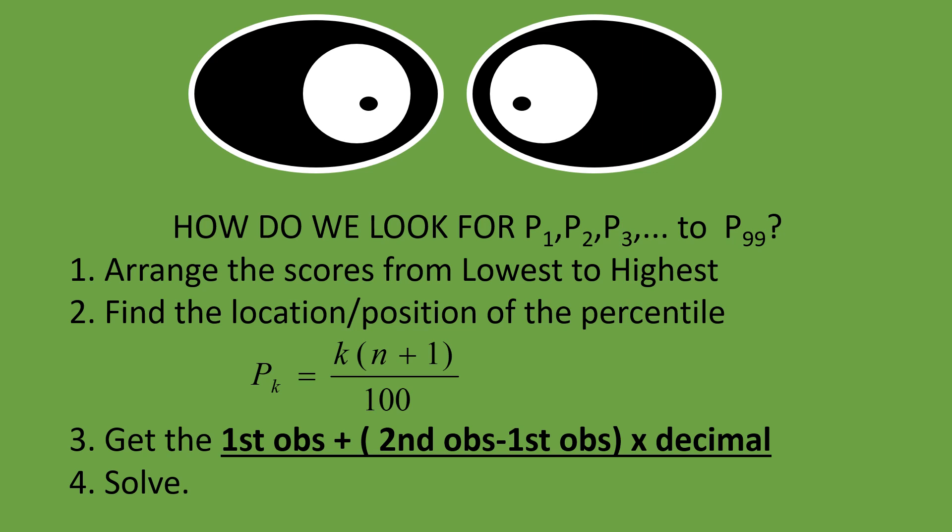The formula is: P sub K = K × (N + 1) ÷ 100. Since percentiles divide the distribution into 100 equal parts, when looking for P sub 2, the formula becomes 2 × (N + 1) ÷ 100. For P sub 55, it's 55 × (N + 1) ÷ 100. For the 66th percentile, it's 66 × (N + 1) ÷ 100.